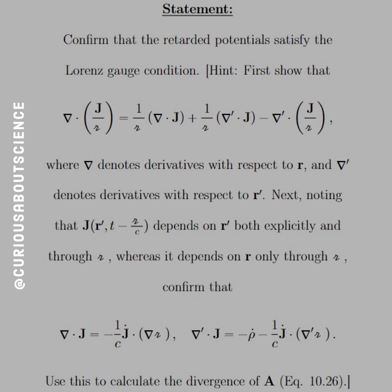Next, noting that J R prime of T minus script R over C depends on R prime both explicitly and through R and through script R, whereas it depends on R only through script R.